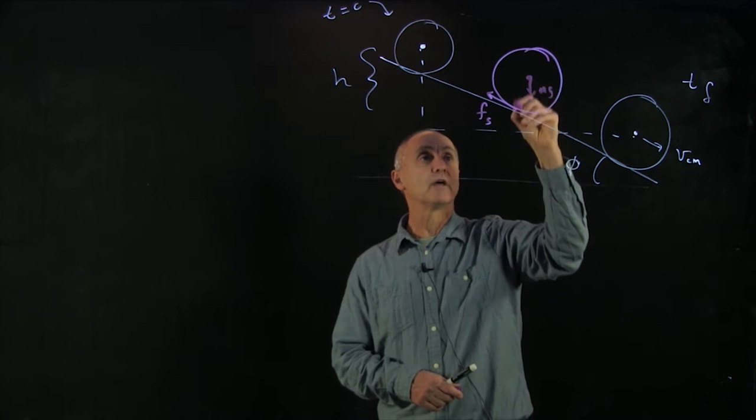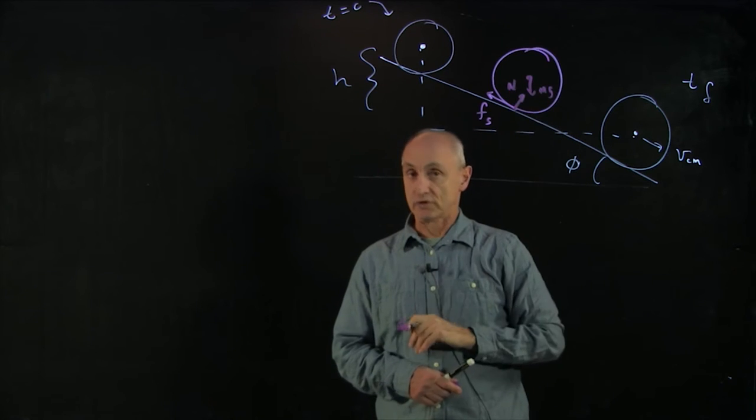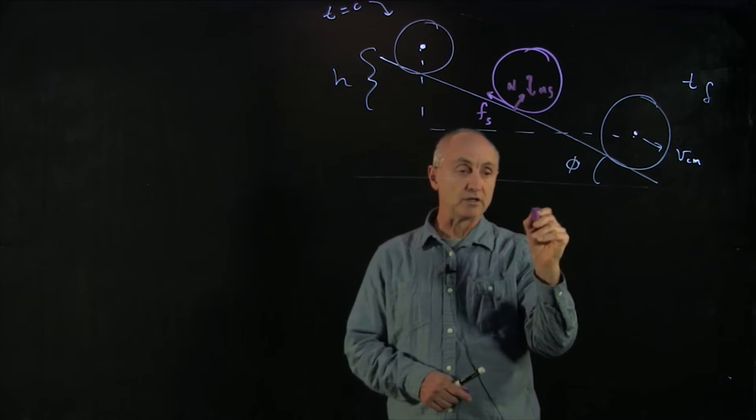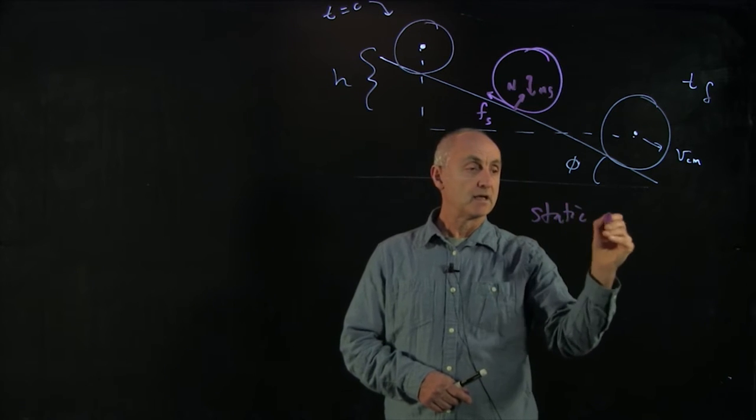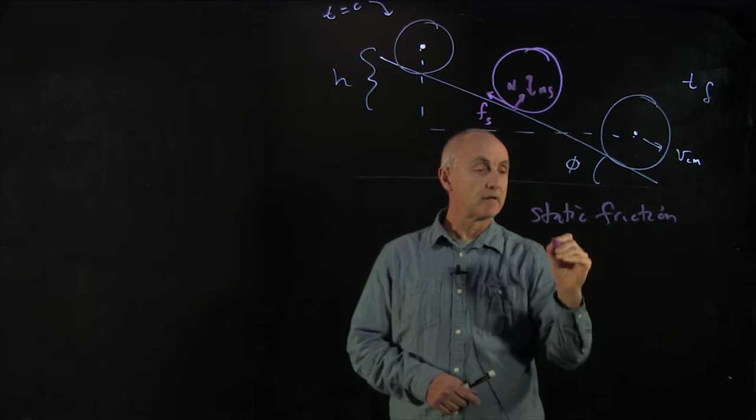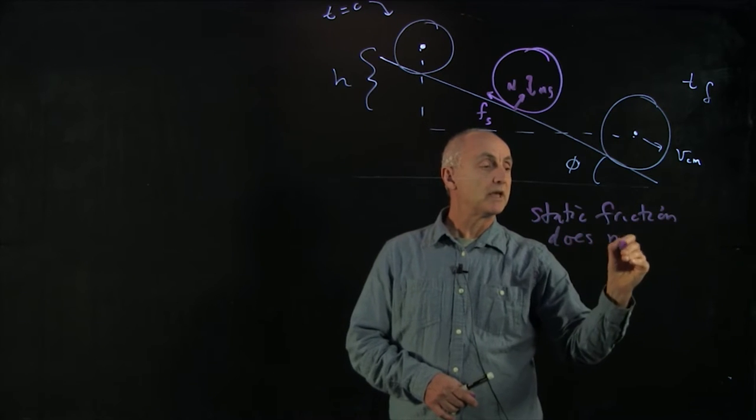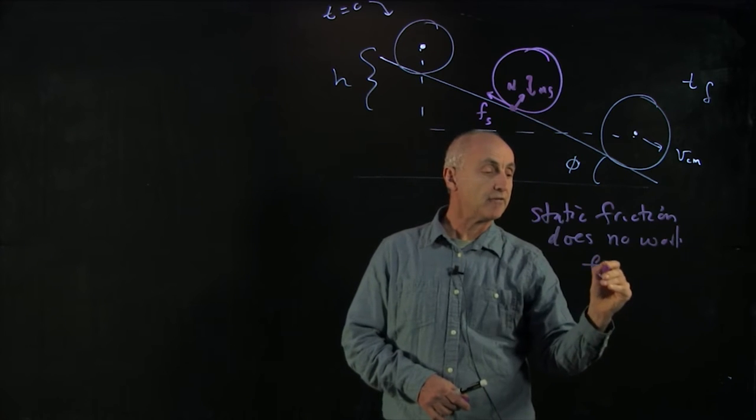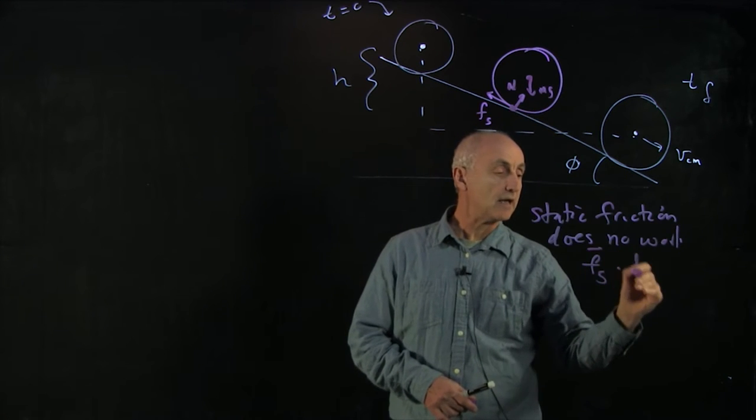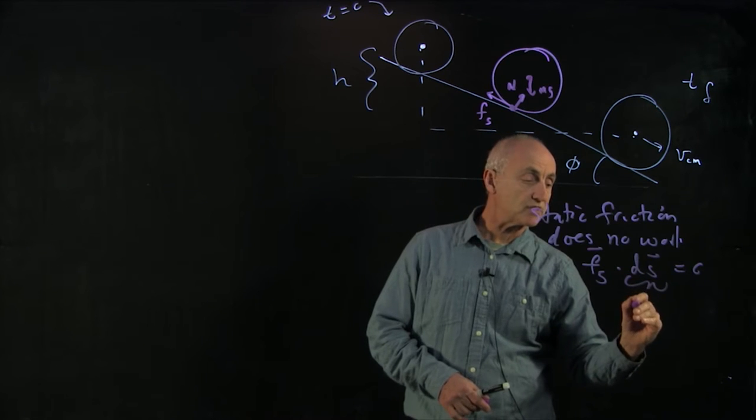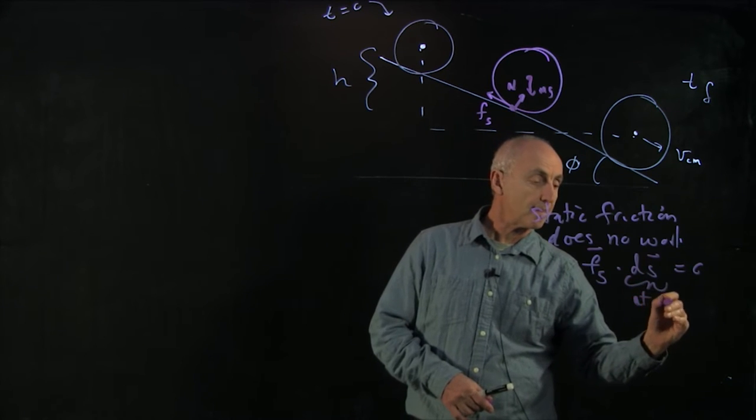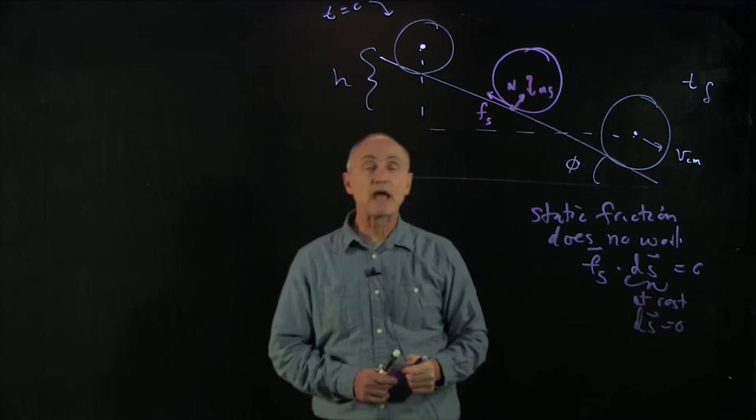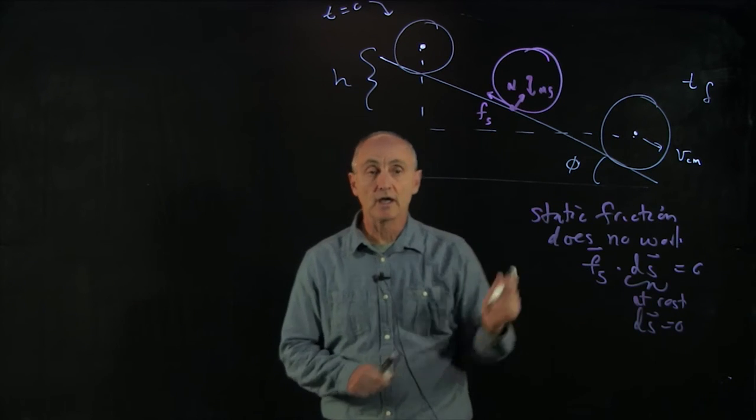There is a gravitational force and a normal force. Now, static friction does no work because the point is always instantaneously at rest. And f dot ds is 0 because the object is at rest, and so the ds is 0.